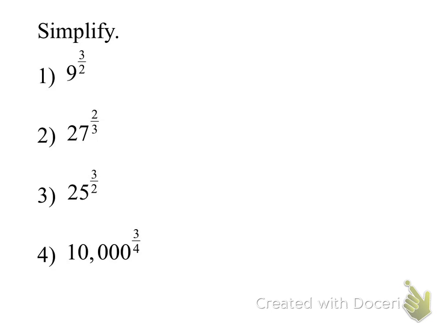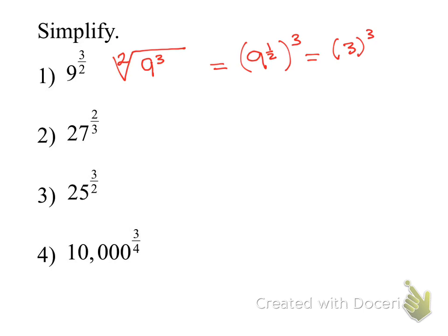Let's try the next one. What kind of root is it? Square root. And what is the exponent? We can write it as nine to the one-half then cubed. What's easiest? The square root of nine is three, and then cubed it is 27.